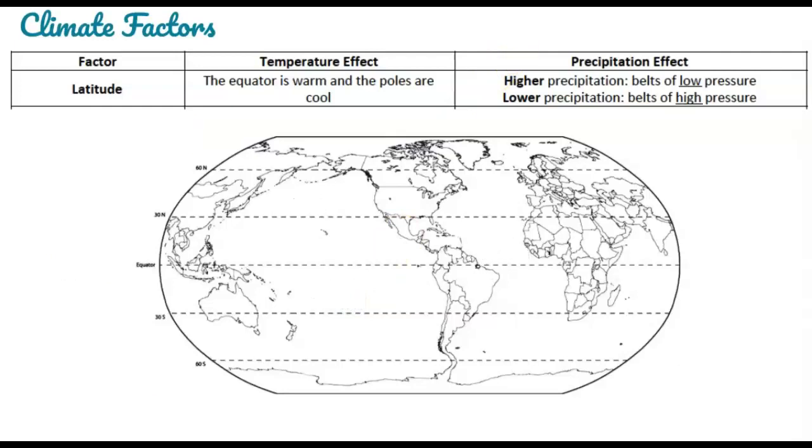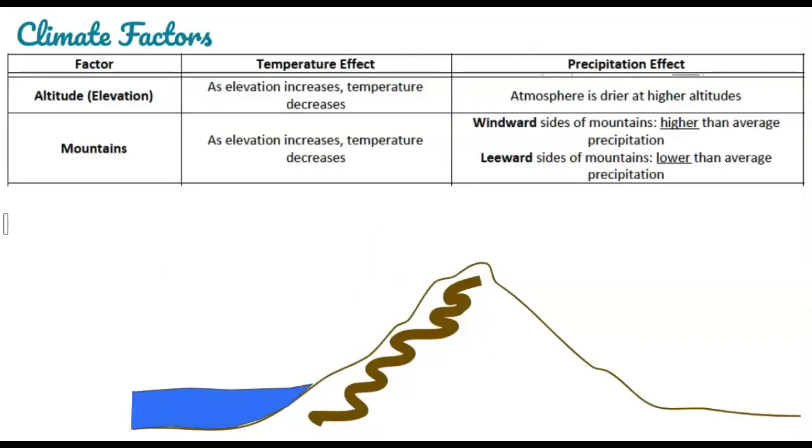The next set of factors have to do with elevation or altitude. As we go higher, it gets cooler. This is something we have talked about before. So that means that if you're in a mountainous region, it's generally going to be cooler. At the top of this mountain that I have drawn, it will be cooler than down at sea level.